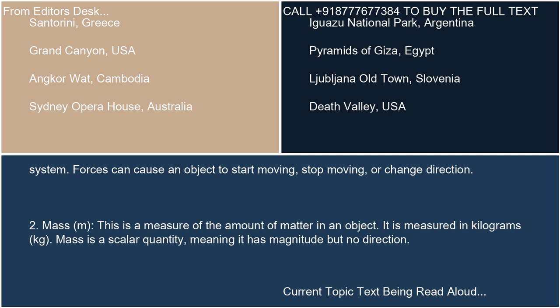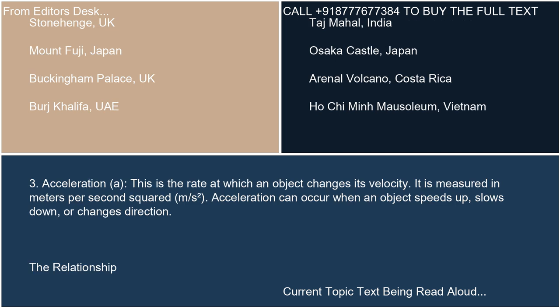Mass (M) is a measure of the amount of matter in an object. It is measured in kilograms (kg). Mass is a scalar quantity, meaning it has magnitude but no direction. Acceleration (A) is the rate at which an object changes its velocity. It is measured in meters per second squared (m/s²). Acceleration can occur when an object speeds up, slows down, or changes direction.